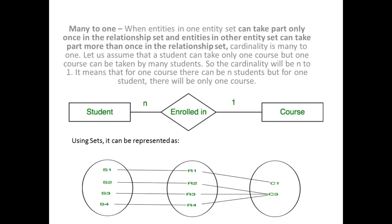Many-to-one relationship: when entities in one entity set can take part only once in the relationship set, and entities in the other entity set can take part more than once, the cardinality is many-to-one. Let us assume that a student can take only one course, but one course can be taken by many students. Here you can see that n students can enroll in one course — for example, many students can participate in a single MCA course.